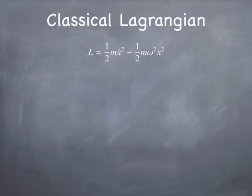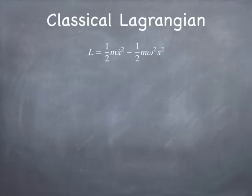Let me remind you how Lagrangians work. Here's a classical physics Lagrangian — the Lagrangian of a mass on a spring. It's got two pieces: the first is one-half m x-dot squared, which you recognize as the kinetic energy of a moving mass, where x-dot is just the velocity. The next term is the potential energy, but it's negative. So it's kinetic energy minus potential energy. In this case, the potential energy is one-half m omega squared x squared.